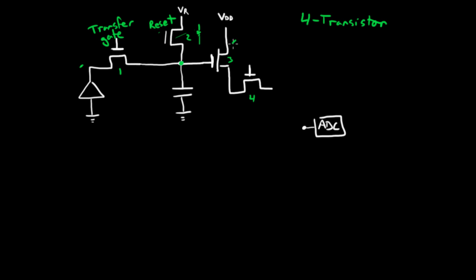This transistor here is the source follower. Source follower. It's this guy. And I'm going to talk about that in a moment. And this is the row select. Row select.